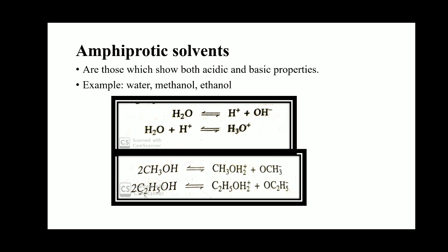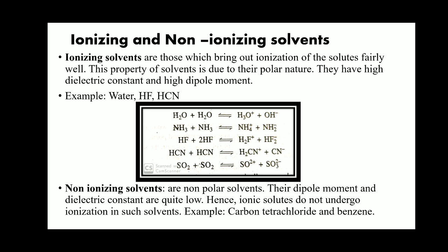Similarly, in the case of alcohol: when it dissociates to form CH₃OH₂⁺ it shows acidic property, and when it dissociates to form CH₃O⁻ it shows basic property. These are known as amphiprotic solvents because they show both acidic as well as basic properties.